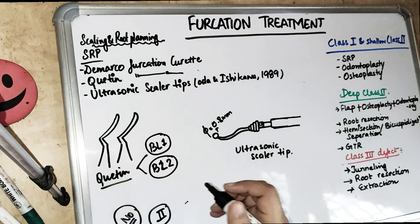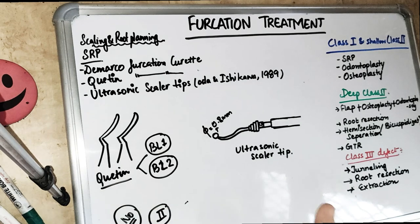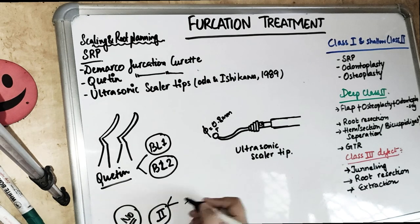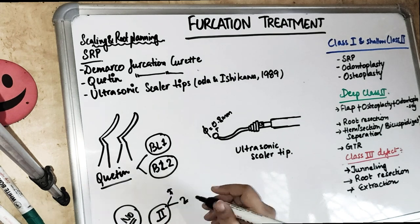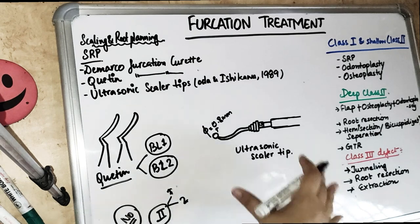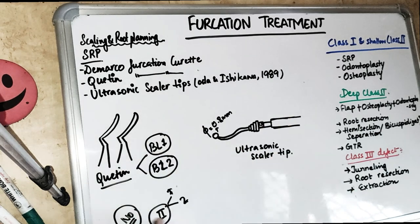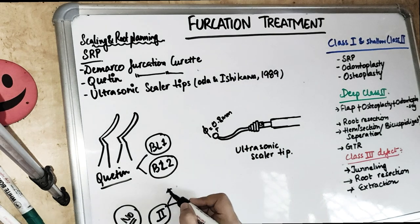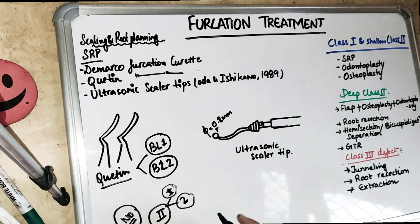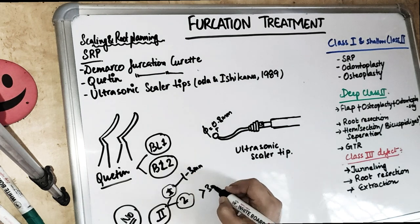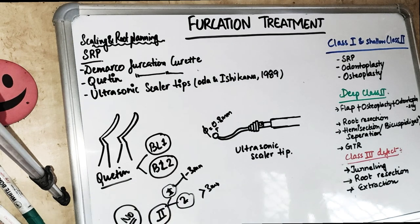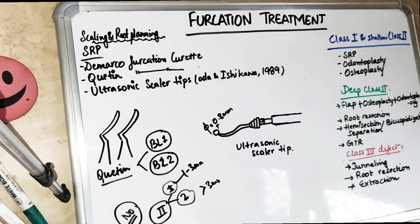We have also covered the modification of the Glickman classification. Grade 2 has two modifications: Grade 2 Degree 1 and Grade 2 Degree 2. These include a vertical component, because all of the Glickman classification is basically a horizontal component. Grade 2 Degree 1 is a vertical component ranging from 1 to 3 millimeters. If it is more than 3 millimeters of vertical involvement, then it is Grade 2 Degree 2.